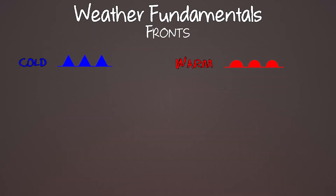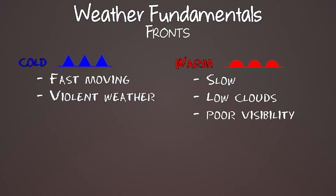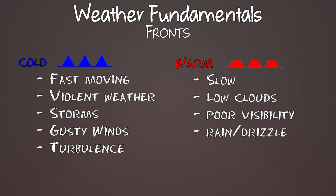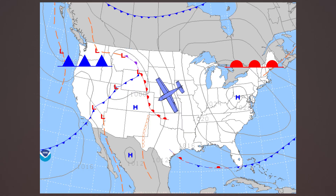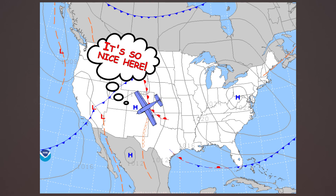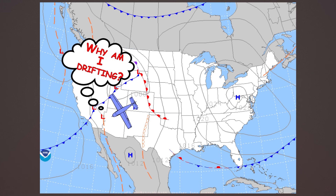As a quick summary: cold fronts are fast and bring violent weather. Warm fronts are slow, bringing low ceilings, poor visibility, and rain. Cold fronts bring storms, gusty winds, and turbulence but pass quickly, whereas warm fronts stick around — giving you rain, fog, and drizzle for maybe a couple of days. Something to keep in mind: when you fly across a front or a front passes, the weather will change. Temperature, moisture, and stability will shift, but most noticeably the wind speed and wind direction will change.